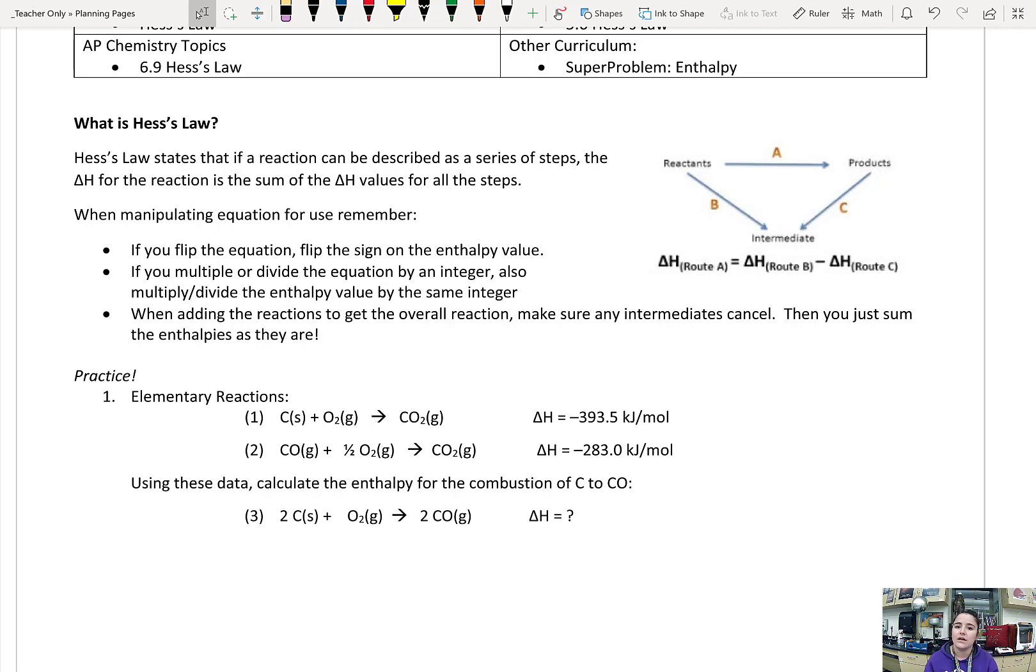Now, we will be manipulating equations in order to solve problems like this, and there's a couple of things that we need to remember. If we flip around the equation, we need to change the sign of the enthalpy value. Makes sense. If in the forward reaction, energy is being released, in the reverse reaction, that same energy must be absorbed. So we're just flipping the sign on that one.